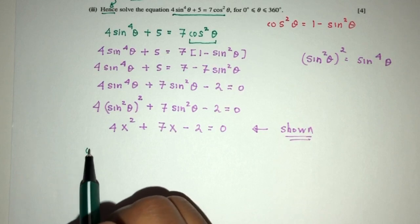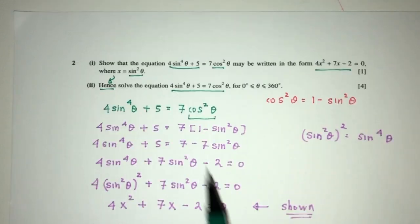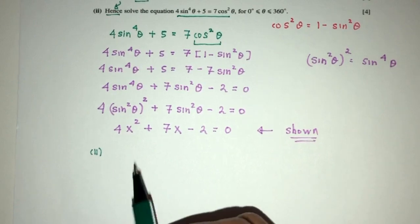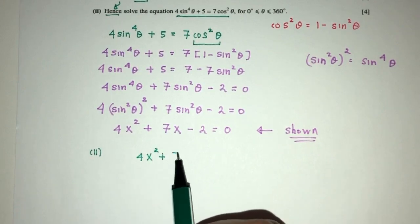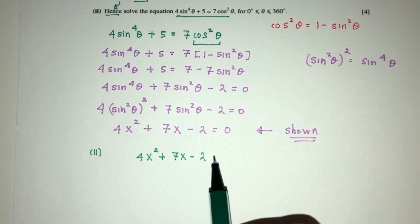Now, for part 2, we know that this is equal to this, so let's continue with this. So, right now we have 4x² + 7x - 2 = 0.